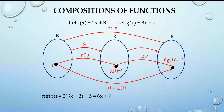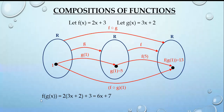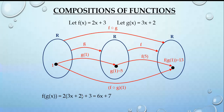For a general x, we first calculate g(x) = 3x + 2. Then f(g(x)) means we substitute g(x) into f: f(3x + 2) = 2(3x + 2) + 3 = 6x + 4 + 3 = 6x + 7. So the value of f composition g of x is 6x + 7.